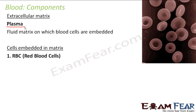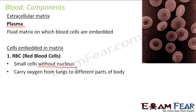The first type of blood cell is RBC — red blood cells. These are small cells without a nucleus. As you can see in the picture, RBCs are small cells without a nucleus, and this is an important point to remember. They carry oxygen from the lungs to different parts of the body. This is the function of red blood cells, because blood helps in transportation and every component of blood has a specific function — RBC carries oxygen from lungs to different parts.